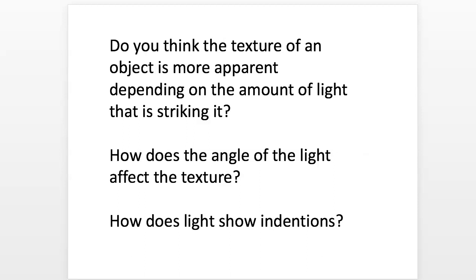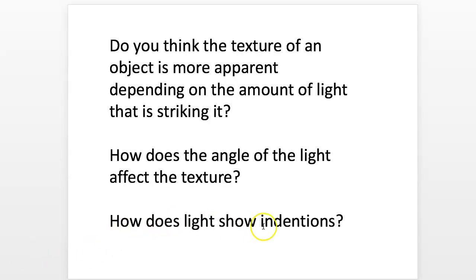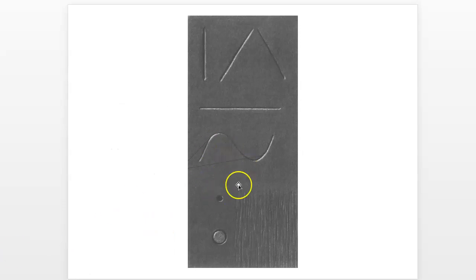How you perceive texture in an object is affected by the amount of light striking it. The angle of light matters too — if the light is far down on the side there'll be a shadow and texture may not be as apparent. If you blast it straight on you might not see the little changes as much. Light shows indentions through small reflections and shadows within gaps.